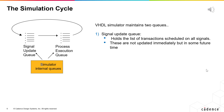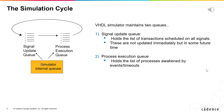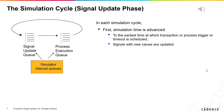A VHDL simulator maintains two queues. One, to keep track of scheduled transactions on the signal, called the signal update queue. And two, a queue to keep track of the processes awakened by events or timeouts, called the process execution queue.